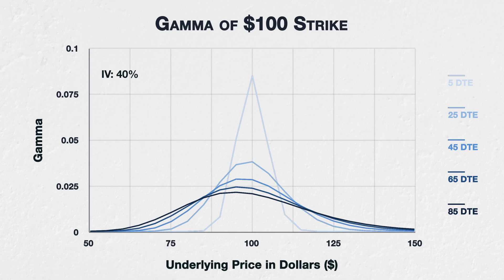When the underlying price is close to the strike price — so when the option is at the money or close to the money — the option's gamma increases as time passes. If the option is still at the money as we come into expiration, gamma spikes dramatically, meaning any move in the underlying price will have a dramatic effect on the option's delta. Towards either side of the chart, where the underlying price is far away from the strike price, we can see that as time passes the gamma reduces to close to zero. The further away the underlying price is, the sooner this happens.